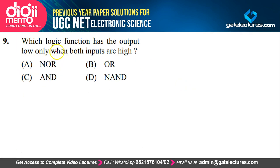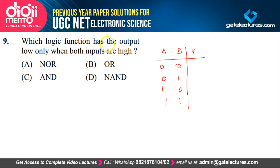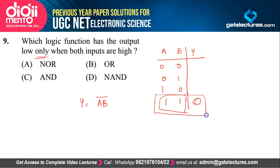Which logic function has the output low when both inputs are high? We can make a truth table. For two inputs there are four possible cases. We want the output to be low only when both inputs are high. Writing this function: A AND B bar — this is actually the representation of a NAND case. So NAND logic function has output low when both inputs are high. In an AND gate, output is high when both inputs are high. Since we want output low when both inputs are high, we put a bar — making it a NAND function.